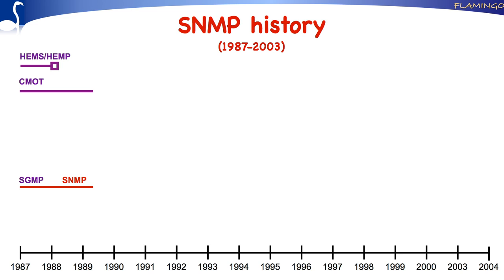CMOD is basically the Internet-specific version of CMIP, which is defined by the ISO OSI. At that time, many people believed that OSI protocols would finally also replace the Internet protocols. It seemed therefore a wise idea to already work on a smooth transition towards OSI. Since SNMP was considered to be a fast and simple intermediate solution, progress of the SNMP proposal towards an IETF standard went relatively fast. The first draft was published in August 1988, and by May 1990, SNMP got accepted as full Internet standard, with standard number 15.